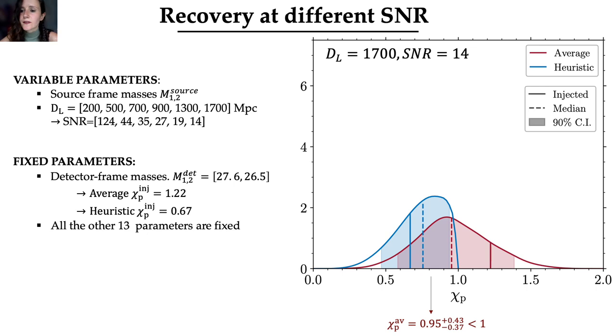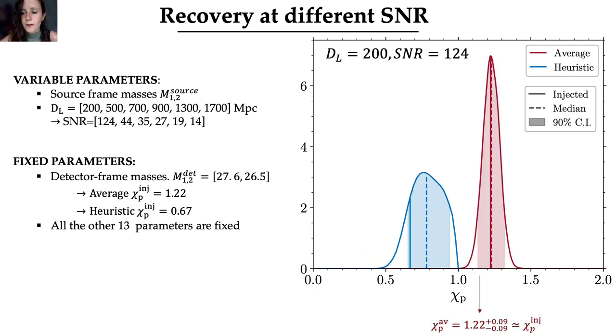So, for the system with the lowest SNR, the posteriors of the two χp definitions are largely overlapped, and also, with the average definition, which is the red distribution, we recover a value of χp that is lower than one, meaning that we cannot say with high confidence that this source is composed by black holes with two misaligned spins. Instead, if we look at the injection performed with the highest SNR, we can see that the two distributions are totally separated, implying that we can infer the presence of two precessing spins with a credibility of 99.9%. And one common feature of all these plots is that the blue distribution, which is the heuristic χp, is always artificially cut at the value of χp equal 1.